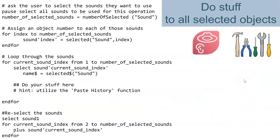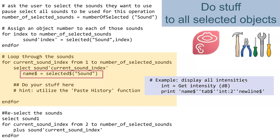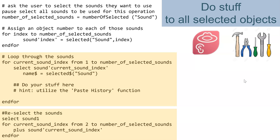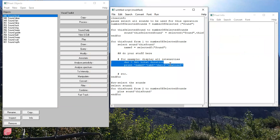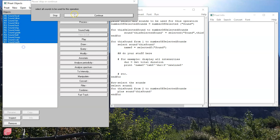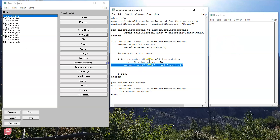Now, this is a really useful tool to repeat the same action on every sound that you select. First, it asks you to select the sounds you want to do stuff to, and then it counts them and numbers them. It loops through each one of the sounds, identifies the name of each one, and then you choose exactly what you want to do with it. For example, you can have it obtain the intensity of each sound and then print it to the info window, and then after it's done, it'll reselect the sounds. This is useful for making sure it acted on all the ones you intended, and also if you need to repeat the same action with some minor change — for example, extracting all the durations, or all the intensity values.